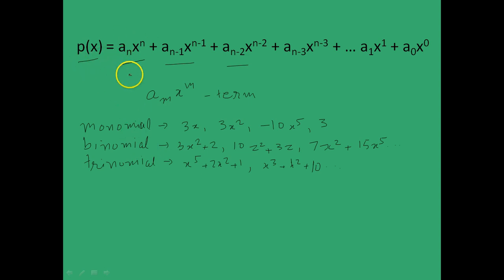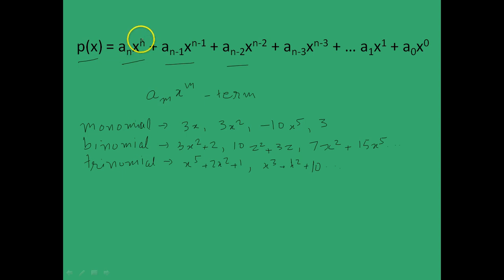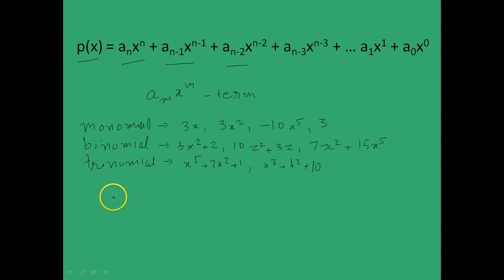Another notation attached with polynomials is the degree of the polynomial. The degree of the polynomial is given by the highest power of any term present in the polynomial. It will be more clear with an example. Consider the polynomial x squared plus 10x to the power 5 plus 3x squared.